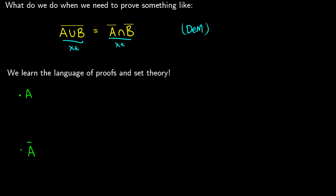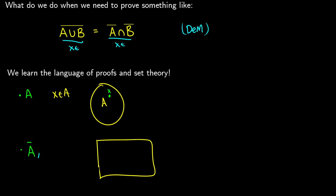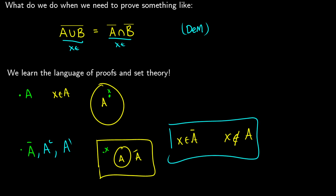It's good to remind ourselves of the actual language of set theory. If we have a set A, we can say X is an element of that set — pictorially, we have some element X inside it. More interesting is the complement of A, which you might see as A-bar, A-superscript-C, or A with a prime symbol. The complement of A is everything outside A. In set proofs this means two things: X is an element of A complement, and equivalently, X is not an element of A.